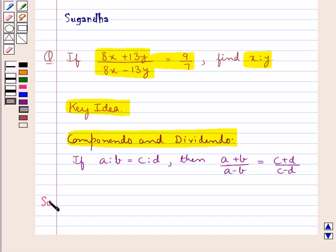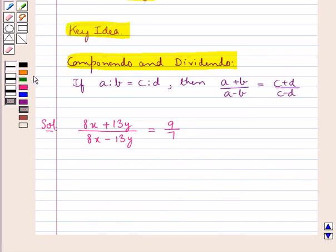Let's move on to the solution now. In the question we are given that 8x plus 13y upon 8x minus 13y is equal to 9 upon 7, and we need to find x is to y. Let this be result 1.